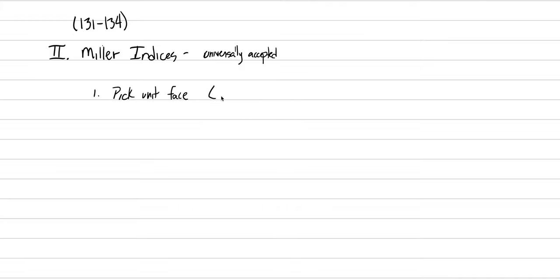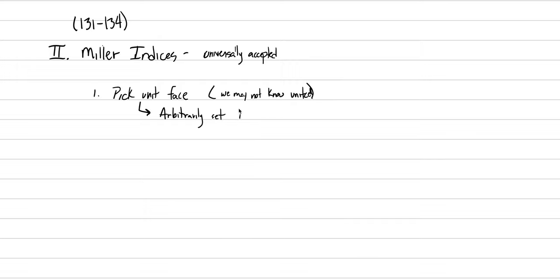Most of the time we don't know the unit cell, so we may not know the unit cell dimensions. Instead, what we do is use the external morphology to make our face assignments. We arbitrarily set distances of this one unit face to one. The face tends to be the largest — tends to be a large front-facing face.